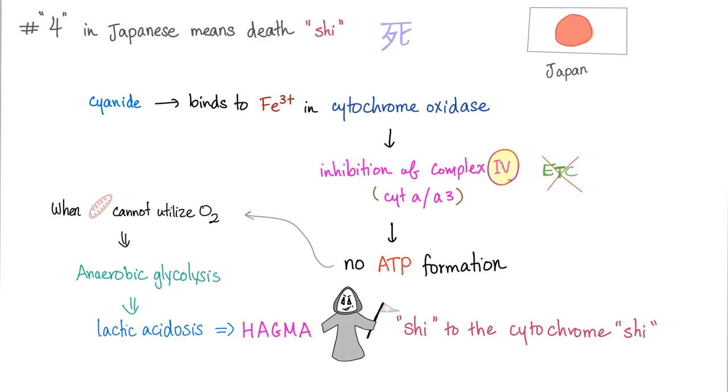So to remember this. Death to the mitochondria. Shi to the mitochondria. The number is 4. So complex 4 is affected.